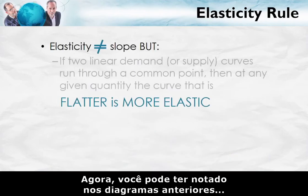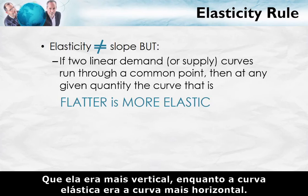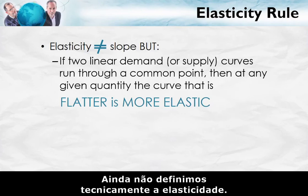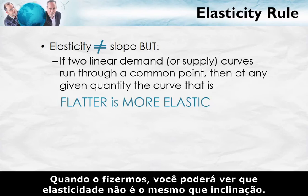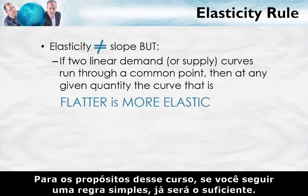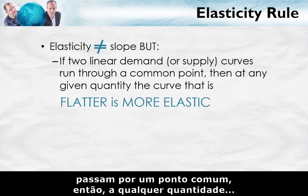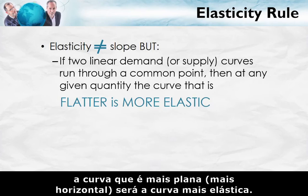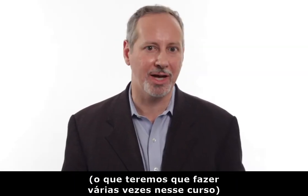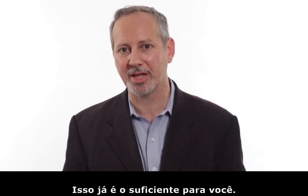You may have noticed that the inelastic curve has the higher slope — it is more vertical — while the elastic curve is more horizontal. Elasticity is not the same as slope, but they are related. For the purposes of this class, follow this simple rule: if two linear demand or supply curves run through a common point, then at any given quantity, the curve that is flatter — more horizontal — is the more elastic curve. So if you're drawing two demand curves that run through a common point, the flatter one is the more elastic curve.